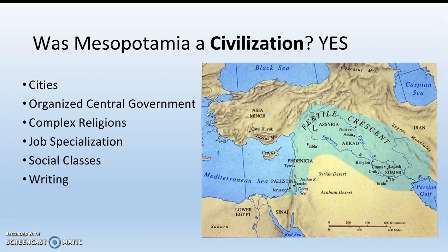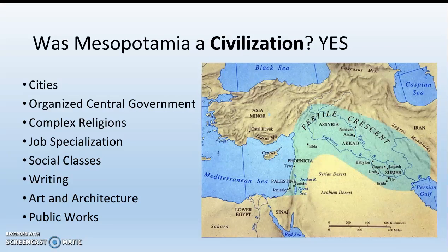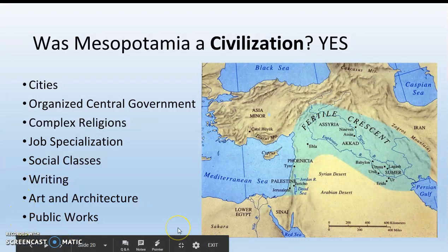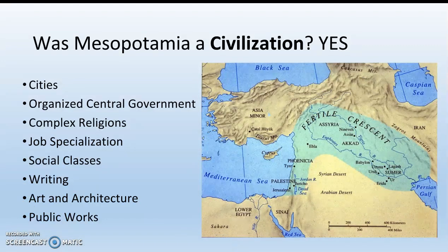The last thing we'll discuss is the eight components of civilization. For a society to be considered a civilization, they must have: cities — think Ur; organized central government — think the king at the top; complex religion — they're polytheists; job specialization — artisans, merchants, kings, nobles, priests; social classes — who's on top and who's on bottom; writing — that's cuneiform; art and architecture; and public works. Was Mesopotamia a civilization? Yes. We'll use these eight components to evaluate other civilizations throughout Unit 1.